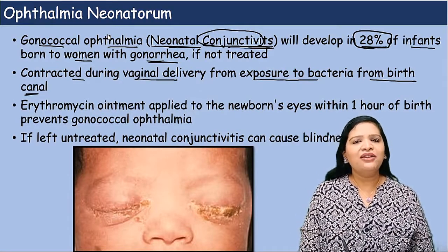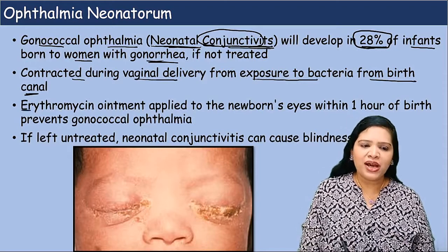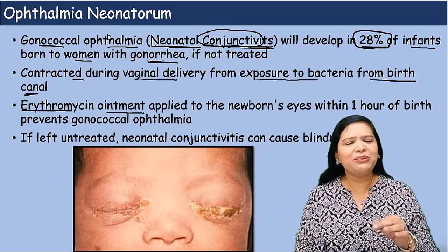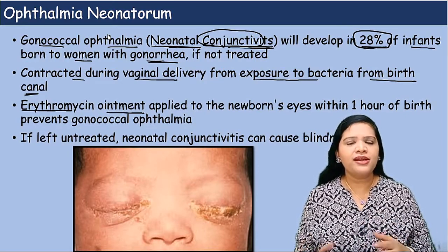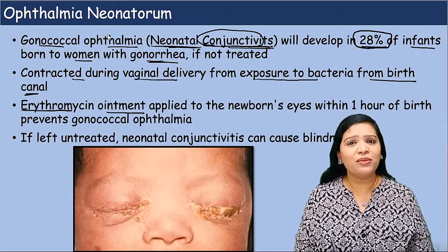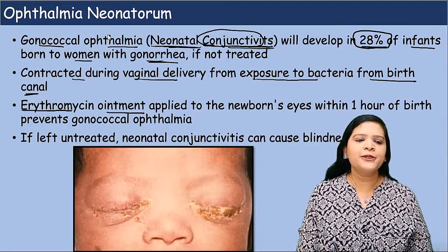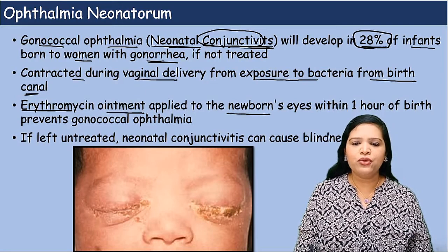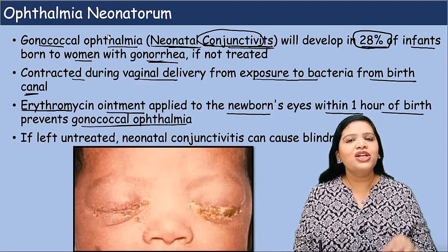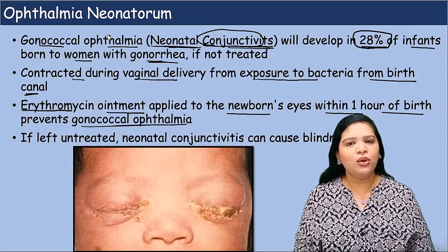That is why after normal delivery, immediately in hospitals, nurses apply erythromycin antibiotic — in the form of ointment or eye drops — right after the child is born. After washing the child, they apply one drop in each eye. This antibiotic erythromycin is applied even if the woman is infected or not; it is a routine procedure for every child. Erythromycin ointment applied to the newborn's eyes within one hour of birth prevents gonococcal ophthalmia. If the bacteria are present, this antibiotic kills them.